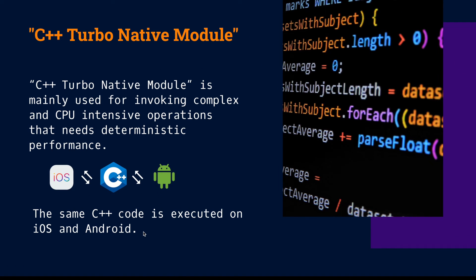Let's talk about C++ TurboNative Modules. C++ TurboNative Modules is mainly used for invoking complex and CPU-intensive operations that need deterministic performance. Also, the same C++ codebase is executed on both iOS and Android side — this is one of the key differences between TurboNative Modules and C++ TurboNative Modules. When we need to run complex logic that is highly CPU-intensive and requires deterministic performance, we can use C++. But keep in mind, we can also run logic on the JavaScript side instead. We should be considerate about using C++ TurboNative Modules — we shouldn't use it for all seemingly complex logic if the logic actually runs fast on the JavaScript side.